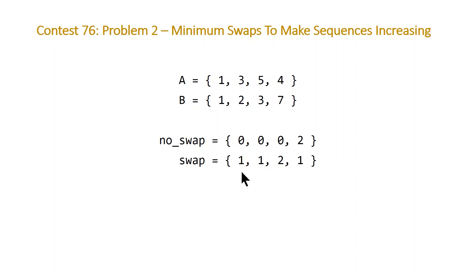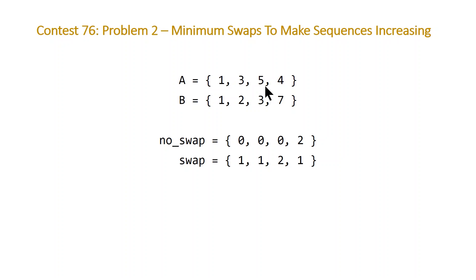We get our answer by taking the minimum of these two arrays at the last index. Looking at the first two elements (index one), since [1,2] and [1,3] are both strictly increasing, the values stay the same. However, if we were to have a swap at index two giving us [1,3,3], that's not strictly increasing, so we would need at least two swaps. For the full array, we look at the last element, we have one and two, take the minimum, and the answer for LeetCode's example is one.